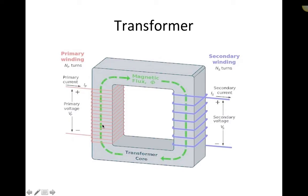One of the important parts of transformers is the ratio of the number of turns on the primary to the number of turns on the secondary. If you have more turns on the primary side compared to the secondary, this is a step-down transformer and the voltage out on the secondary will be less than the voltage put in through the primary. If it's reversed — more turns on the secondary than the primary — that's a step-up transformer and the output voltage will be greater than the input.